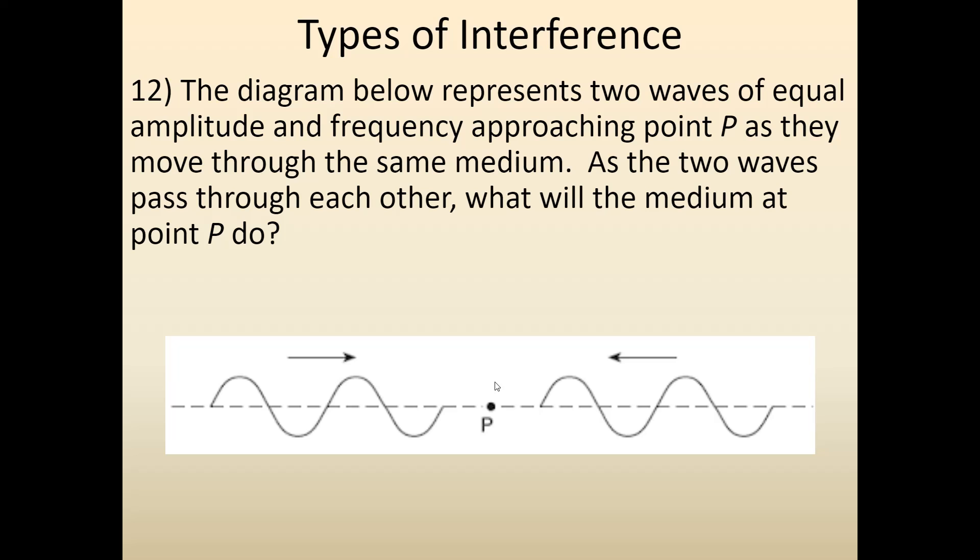This one's a little bit tricky. You need to try to visualize it as best you can. Here they have two waves coming together, and they want to know what point P does. So we need to figure out is, by the time these waves come together, is this going to be constructive or destructive interference? Well, this left-hand wave has a trough coming towards it. This right-hand wave has a crest coming towards it. A crest and a trough meeting at point P will be destructive interference. They have the same amplitude, so if they're going to subtract, that leaves me with nothing. So the answer is point P does nothing.